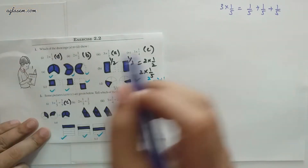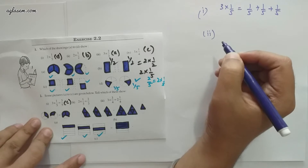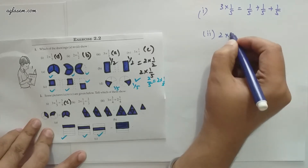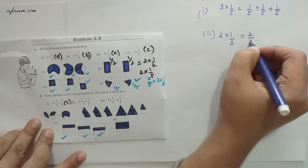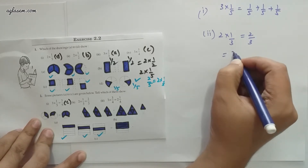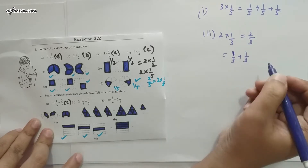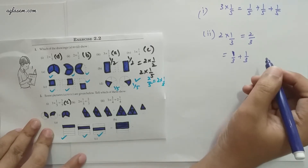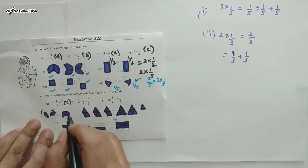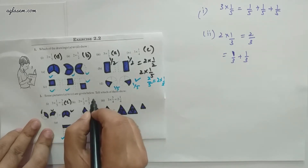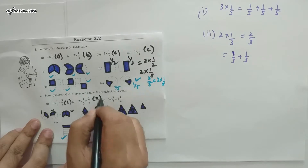Coming to part 2: 2×(1/3) = 2/3. That is 1/3 + 1/3. Is there any such figure? Yes — figure a shows 1/3 + 1/3, which equals 2/3. So part a is the answer to part 2.